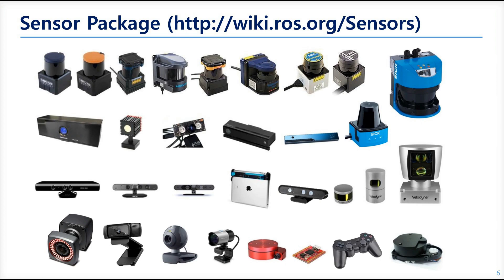The next is the sensor package. There are lots of sensors available in ROS: the LIDAR sensor, which scans objects with laser and figures out their distance, and the RGBD camera, which can get depth data as well as RGB data. Velodyne is especially used in autonomous driving. And the controller, the joypad from PlayStation and Xbox. You can check the details in the link above.